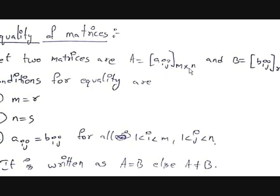Here, m by n means m is the total number of rows, or it is the maximum value of i. n is the total number of columns, or it is the maximum number of j. i and j vary from 1 to m and n respectively.